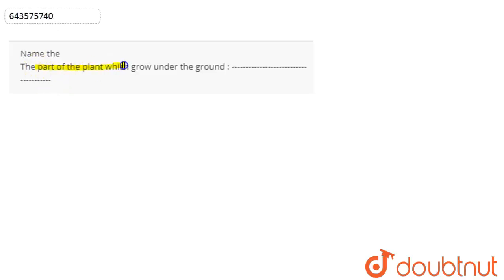that the part of the plant which grows under the ground. So basically, as we know, the three main parts of the plant are the root, stem, and the leaves. So in a plant